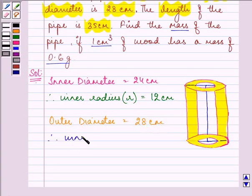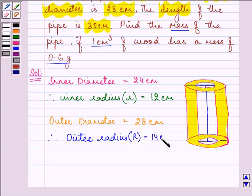So that means the inner radius, sorry, the outer radius that will be denoted by a capital R will be equal to half of it. That means 14 cm.